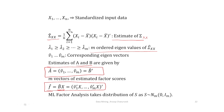For the maximum likelihood procedure, ML factor analysis assumes the distribution of s as N_m(0, I_m).